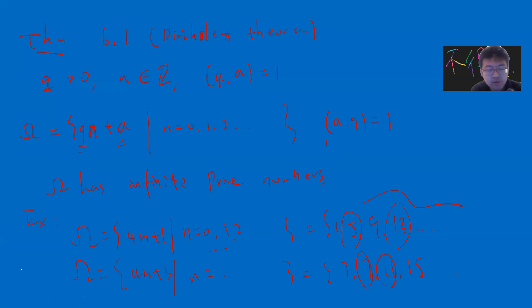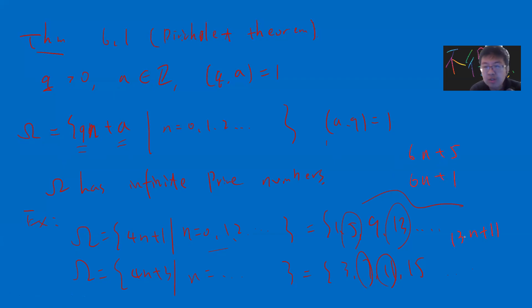For example, forms like 6n+5, 6n+1, and 13n+11 all have infinitely many primes. This is a very non-trivial result with a non-trivial proof.